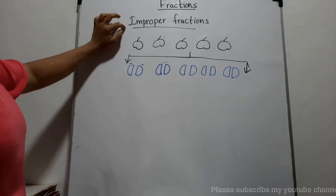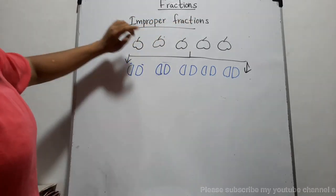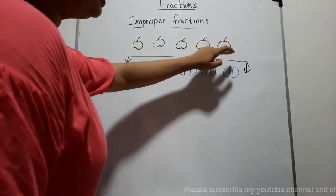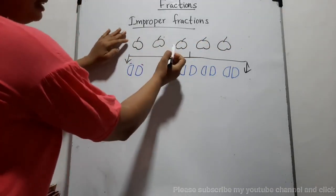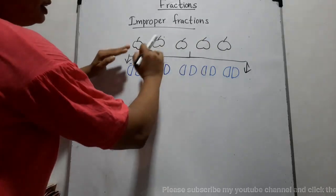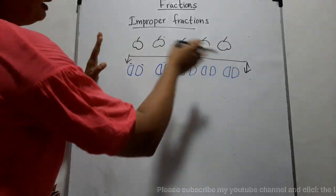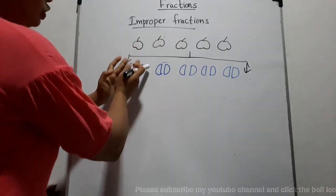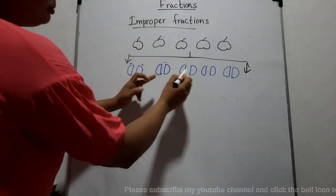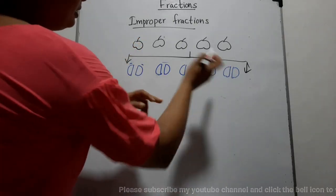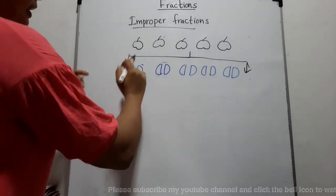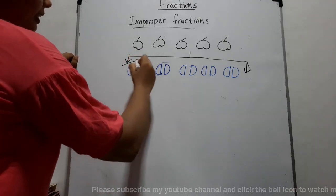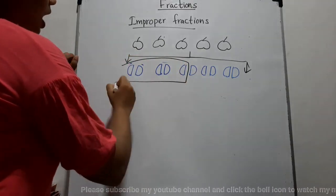Now let's learn what improper fractions are further. There are five apples. It is needed to divide these five apples among two people. I am going to divide each apple into two equal parts. When we divide the five apples among two people, each person gets five halves.